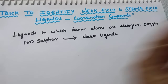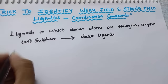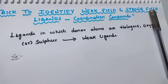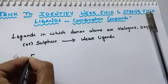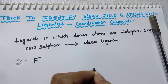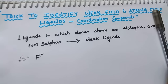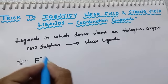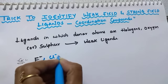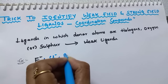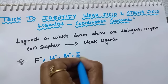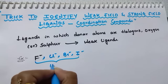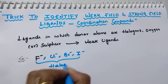Let us see some examples for better understanding. F⁻ — weak field or strong field? It is a weak field ligand, because it is a halogen. Similarly, Cl⁻, Br⁻, and I⁻ are all halogens, so these are weak field ligands.